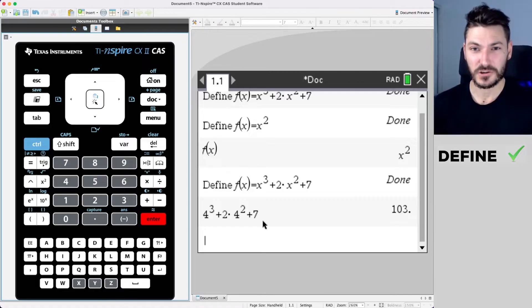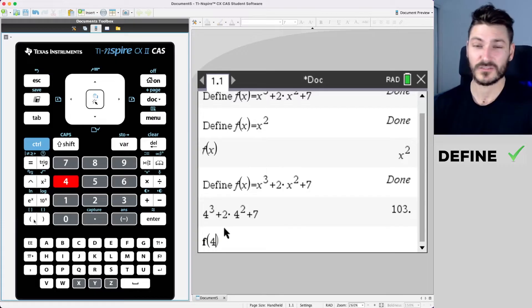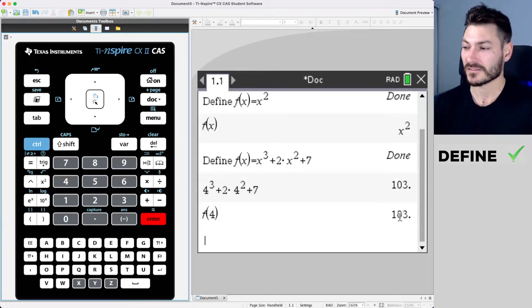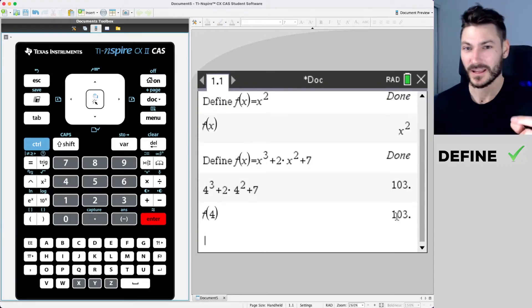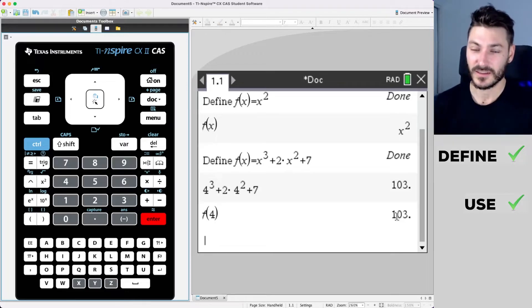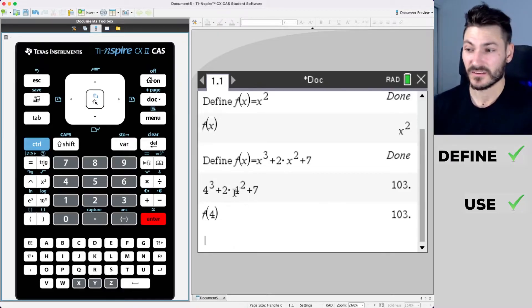The new efficient way that you have in your arsenal is to do f(4). You don't even need to close the brackets. It's that fast and we get 103. That's using the definition that we just made to get a result or evaluate this function.